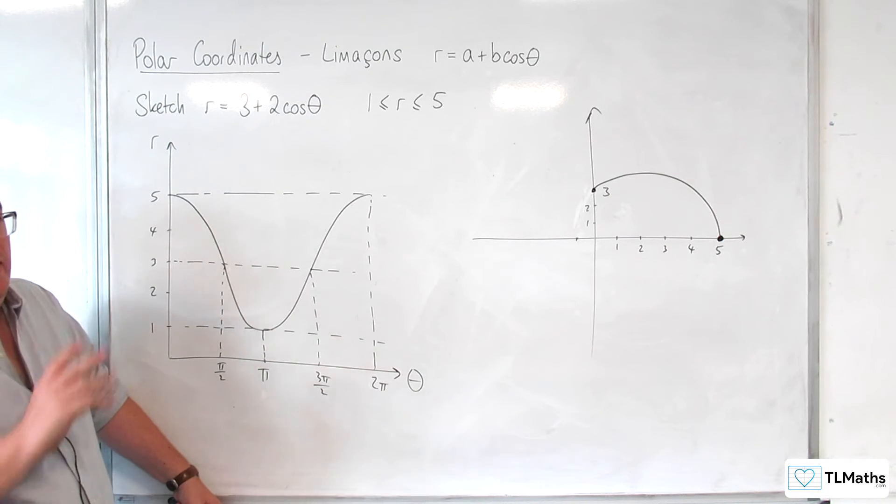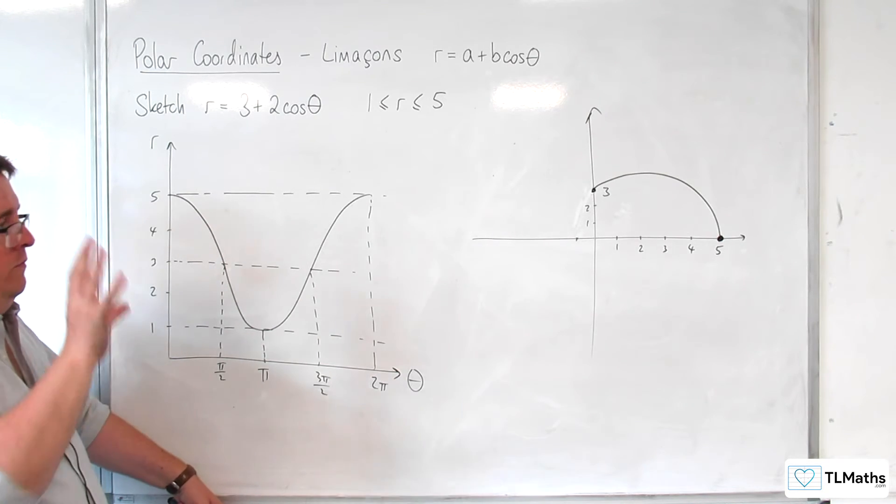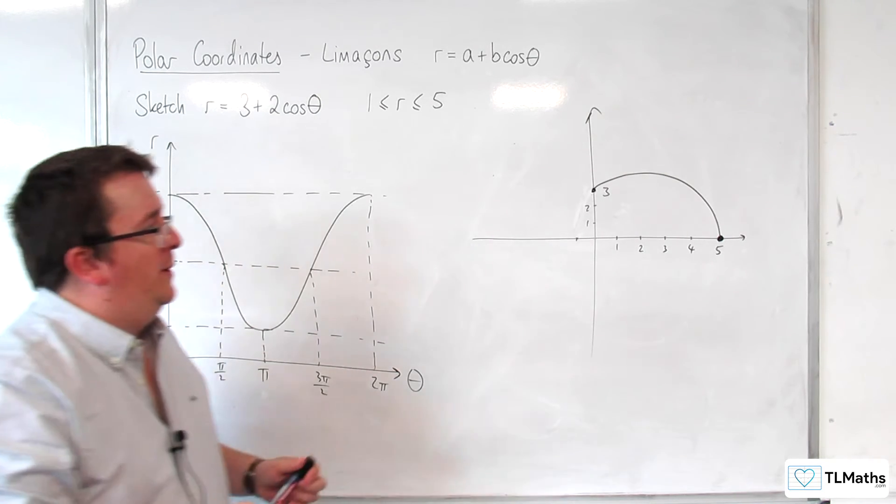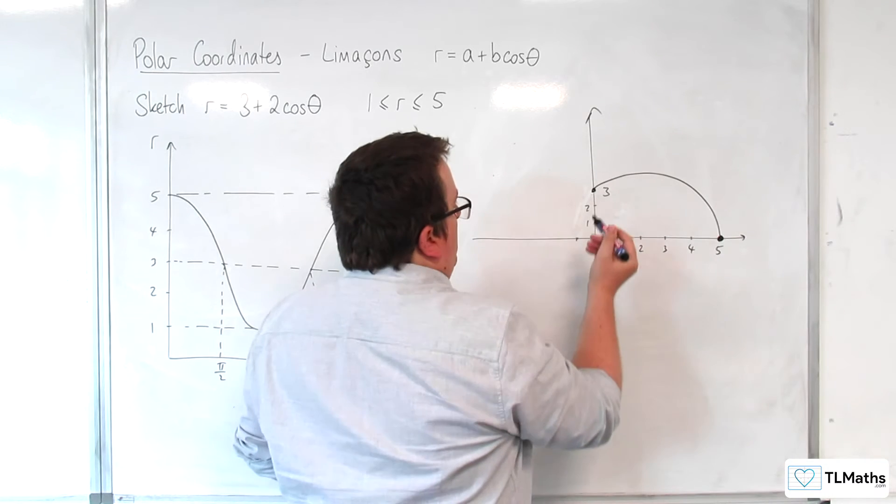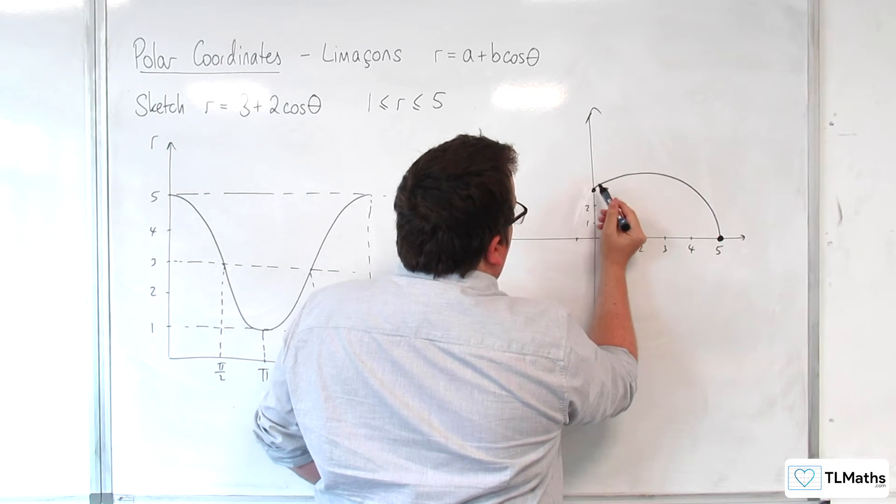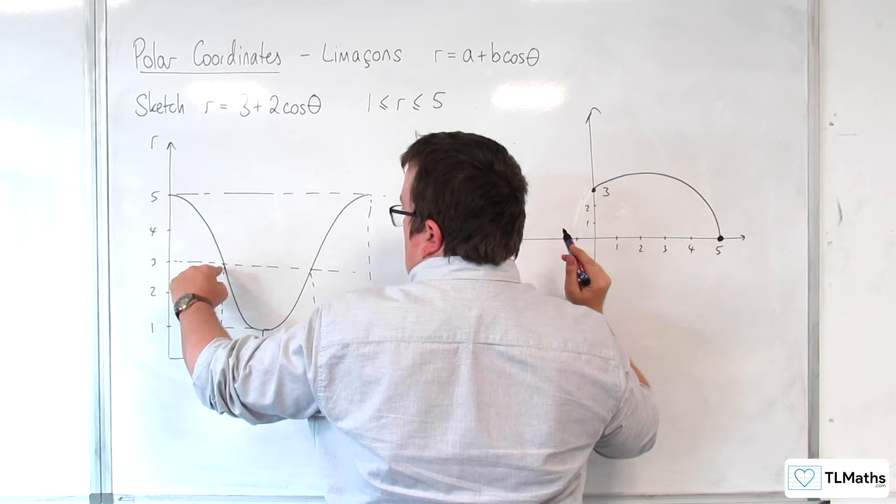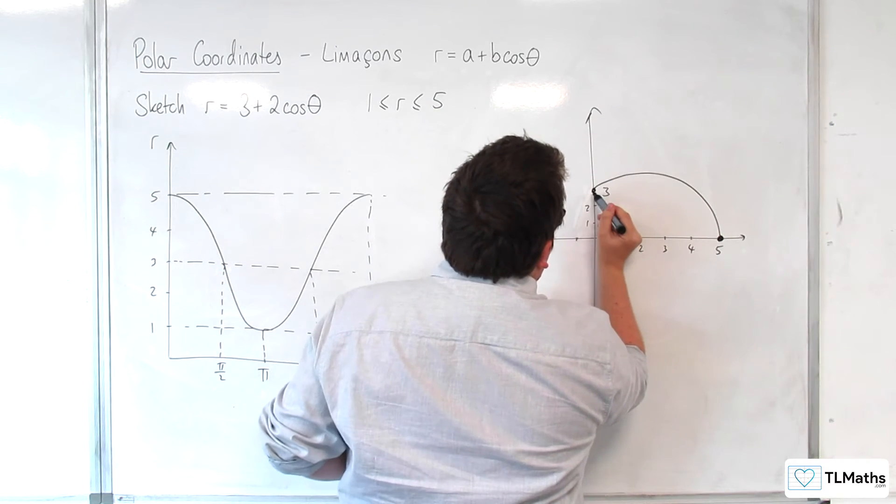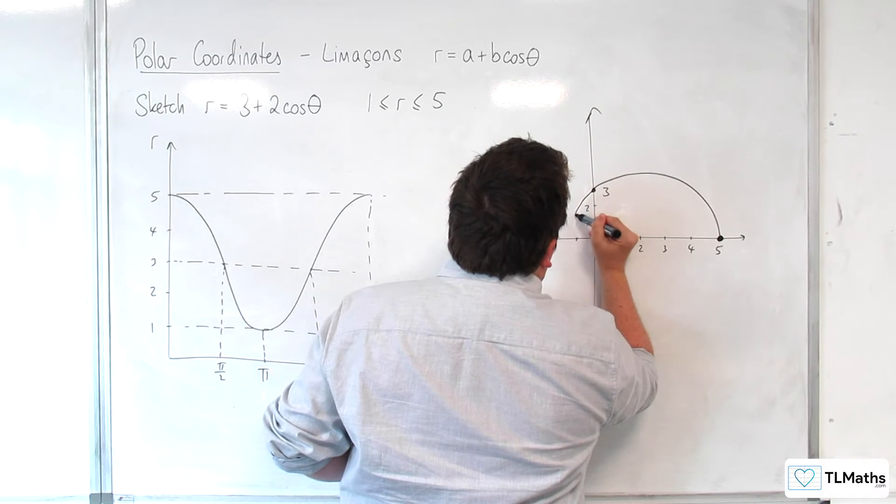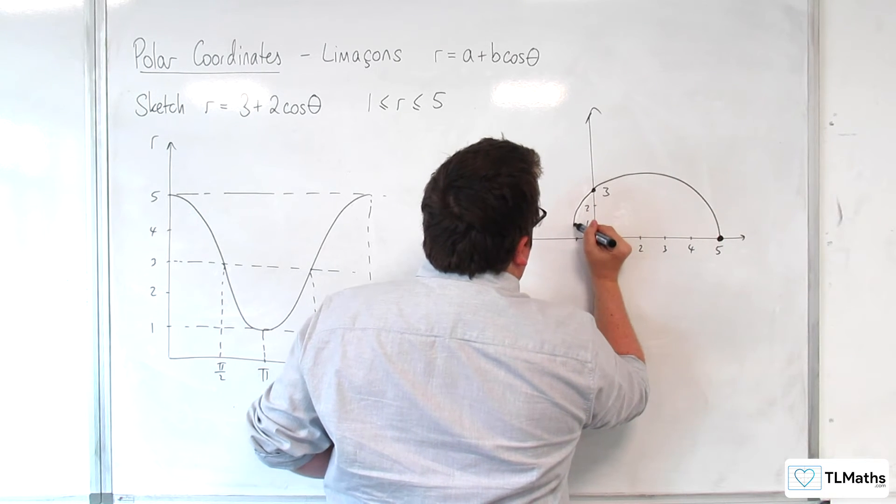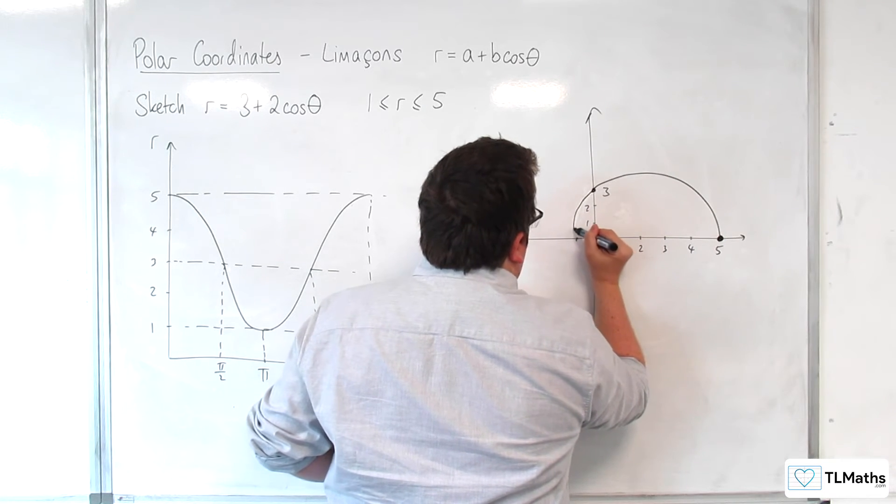Now, maybe that doesn't immediately identify what this curve should look like as it's doing that, but the consequence is that that kind of hasty, that kind of speedy decrease causes the curve to bulge outwards and then come back in on itself.